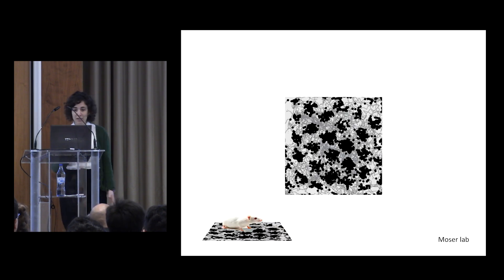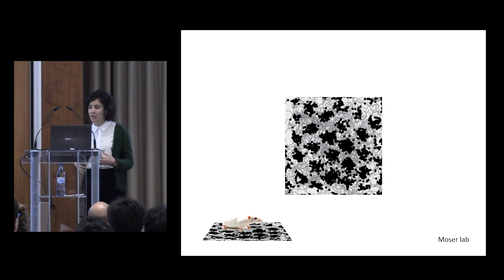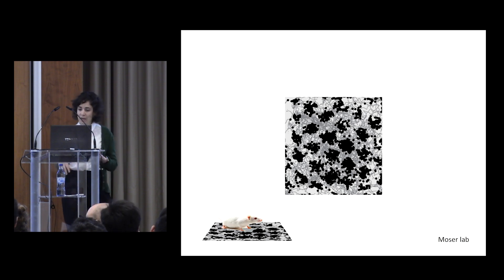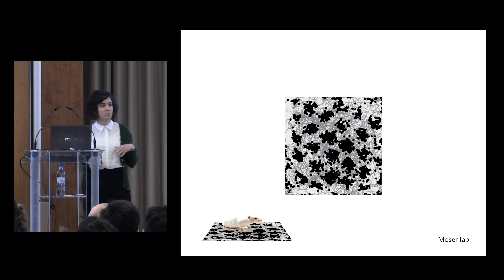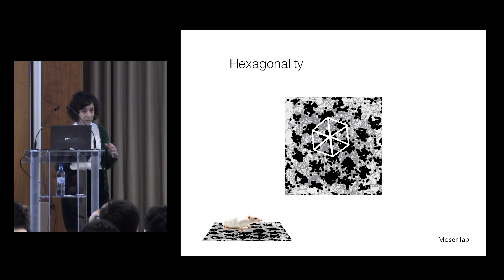Grid cells are neurons thought to be important for navigation and spatial perception, and here is a beautiful example of a grid cell that was recorded in the Moser's lab. Just by looking at this, you can see that the most prominent property of the firing pattern is its hexagonality.